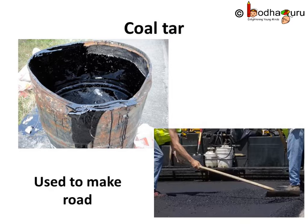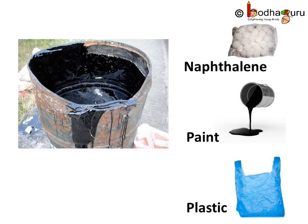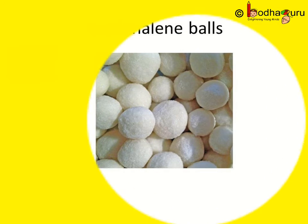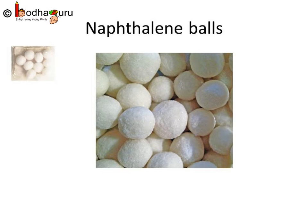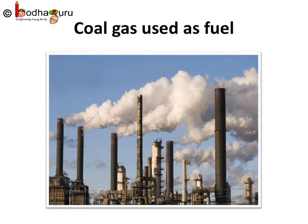You must have seen the use of tar to build roads. Coal tar is also used to produce many things like synthetic dyes, perfumes, plastics, paint, photographic materials, etc. The naphthalene balls used to repel moths and other insects are also obtained from coal tar. It is also used to make drugs, explosives, and roofing materials.